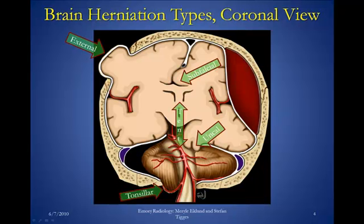Here we're going to talk about some of the complications of intracranial hemorrhage. One of the most important complications would be increased intracranial pressure. This can cause several different types of brain herniations, which are illustrated in this diagram. We can get external herniations of brain through any opening in the skull, subfalcine herniations, tentorial herniations, uncal herniations, and downward tonsillar herniations. Please refer to the increased intracranial pressure podcast for further detail on these herniations and how they can relate to different pathologies.